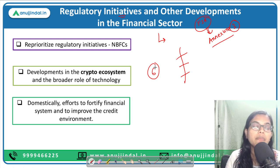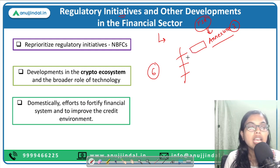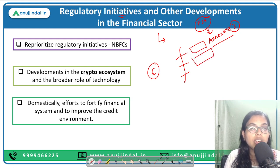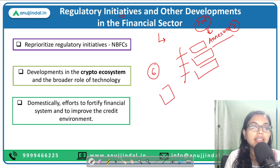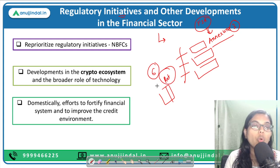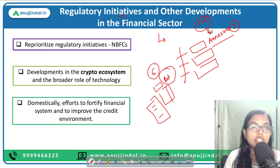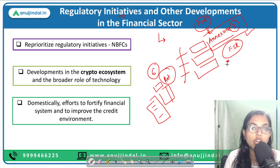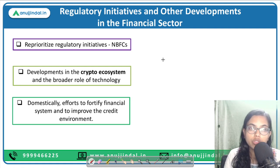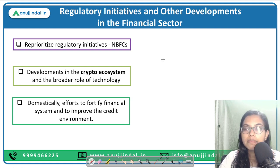All the initiatives taken by the financial sector regulators have already been discussed with you in the past six months, either by me or by Tanvi ma'am. However, in Annexure 3 they have also provided the rationale — what was the rationale behind introducing such regulatory initiatives, and what all regulatory initiatives have been introduced in the past six months with dates in a chronological manner. Please download Annexure 3 from the end of the Financial Stability Report and go through it — you can surely expect a question from there.